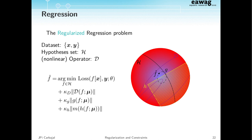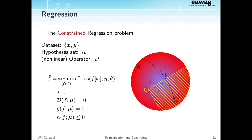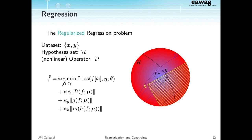Then you have regularized regression, where instead of having exactly fulfilled relationships, we just penalize those terms. Conceptually, in constrained regression you require the constraint to equal exactly zero — or machine epsilon numerically. In regularized regression, when you evaluate those terms, they may be completely different from zero — you're just penalizing them. The solution might be positive, but a small positive number.